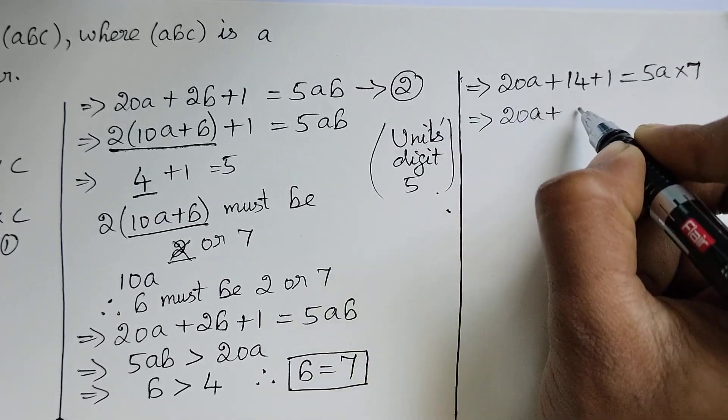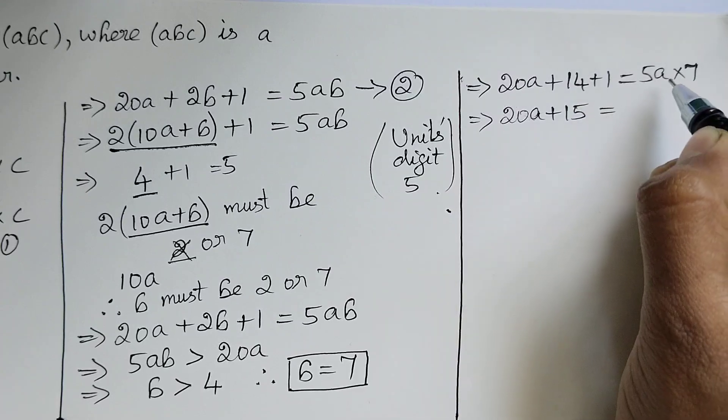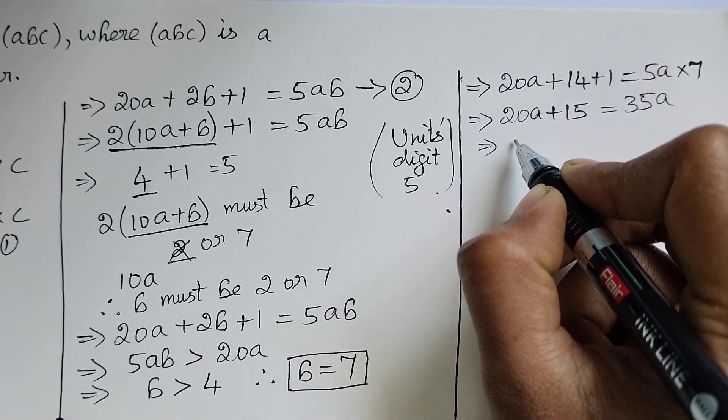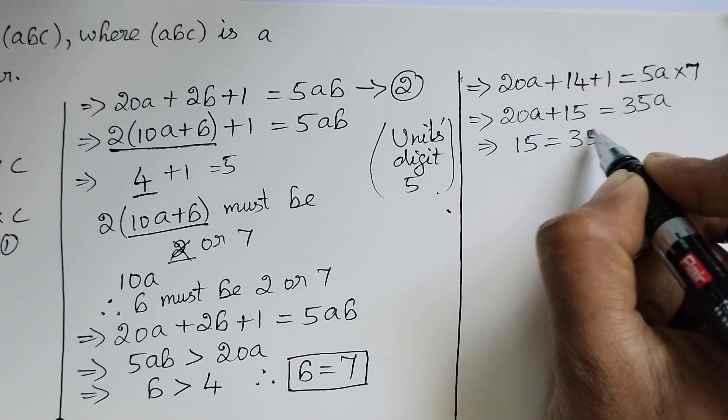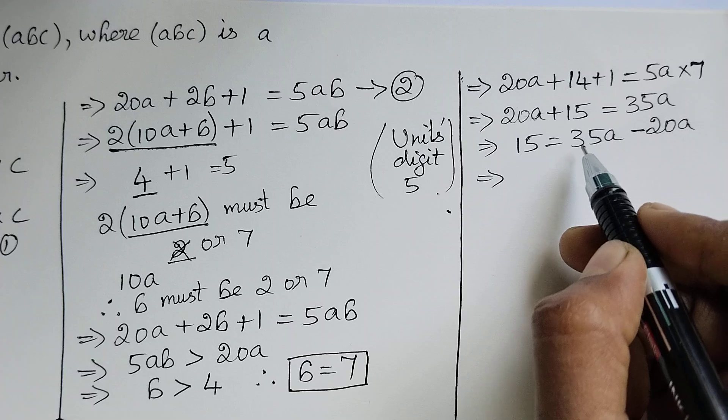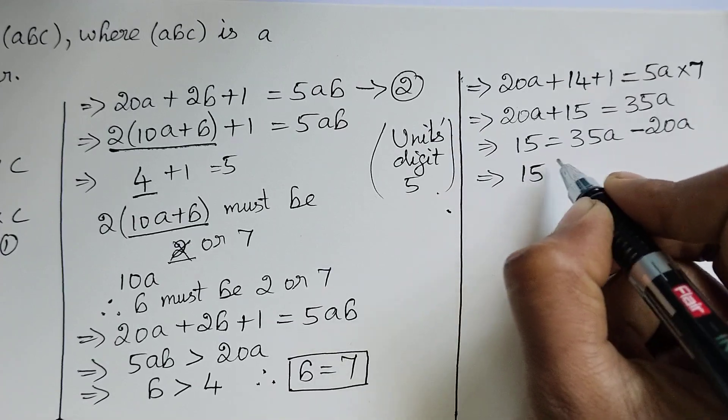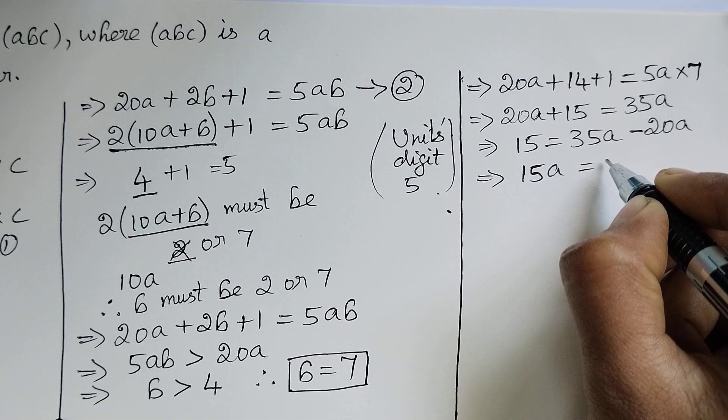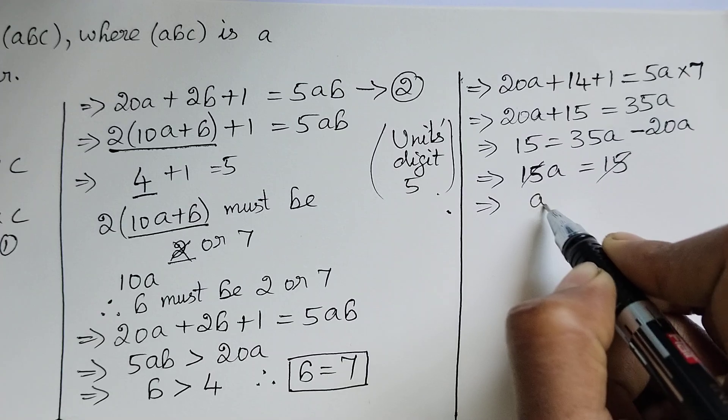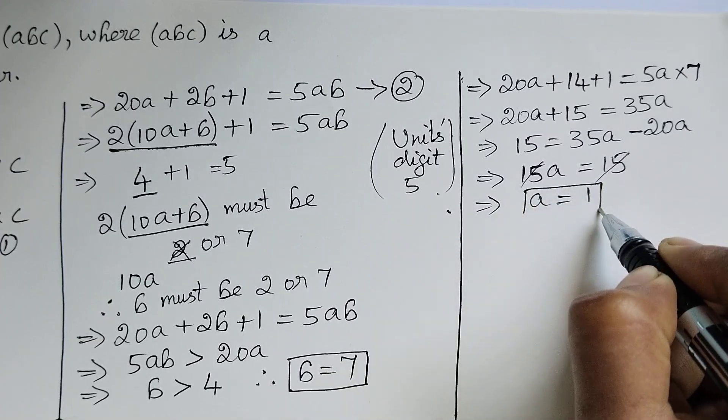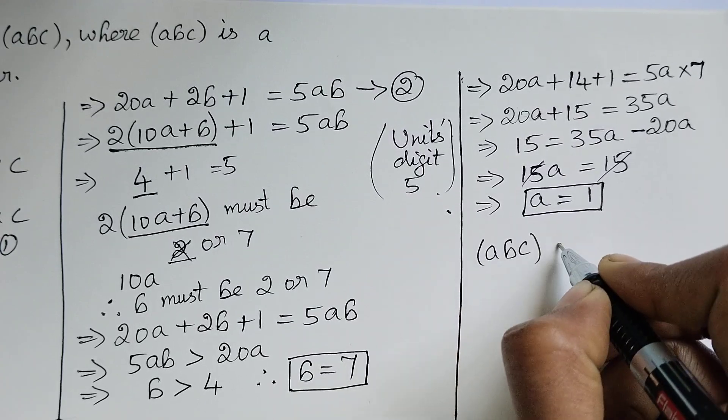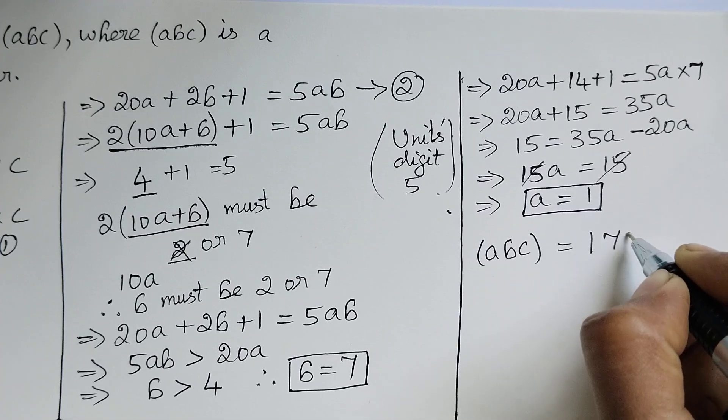Now 35a - 20a = 15a = 15. 15 and 15 get cancelled, therefore a = 1. The term abc = 175.